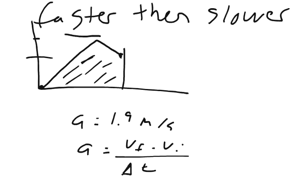My v final I don't know, but my v initial was zero, and my change in time was 9 seconds. And I know that my acceleration was 1.9 meters per second squared. So I can times both sides by 9, and when I do 1.9 times 9, I get 17.1.